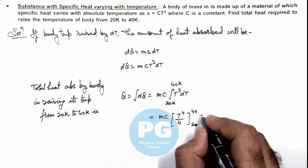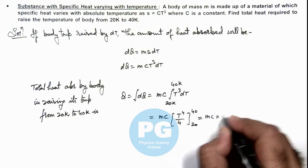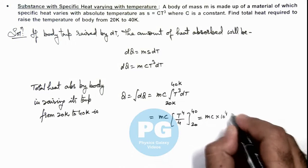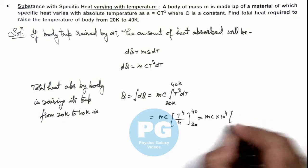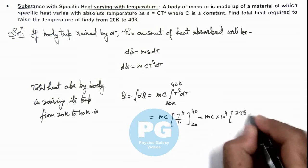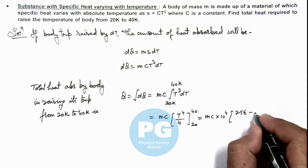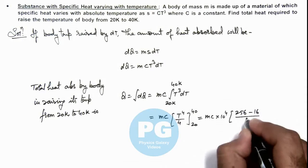So this will give us mc multiplied by 10⁴, multiplied by (4⁴ is 256 minus 2⁴ is 16) divided by 4.